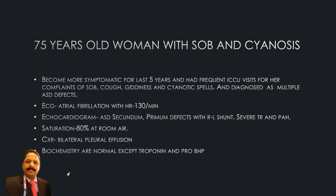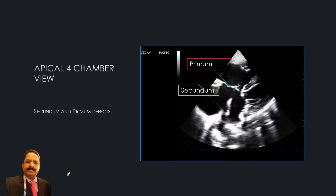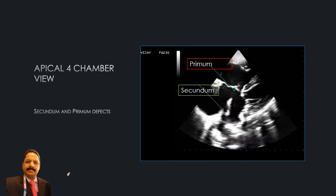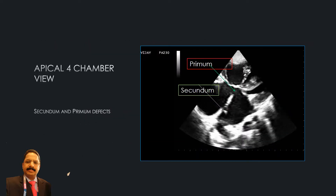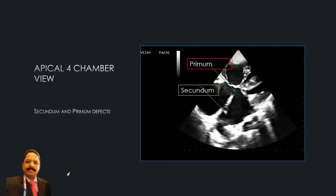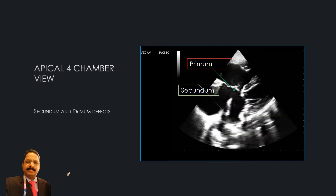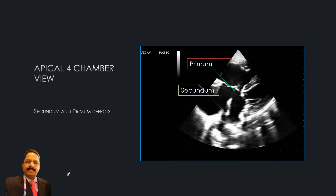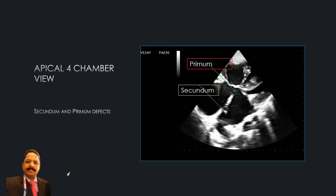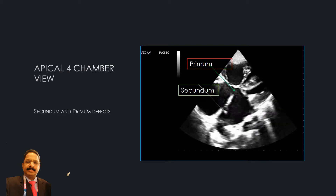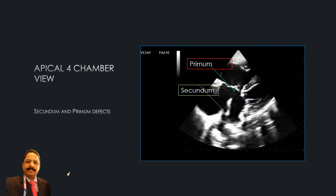This is a four-chamber echocardiogram of the patient. Here you can see the primum defect is a very large defect, as well as the secundum defect.